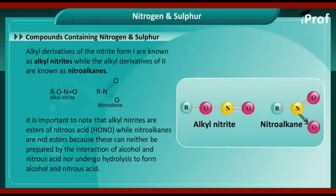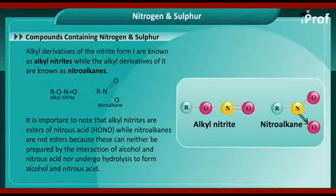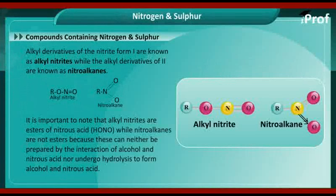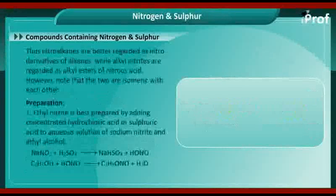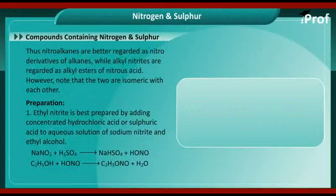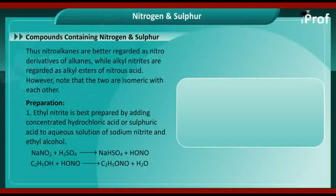It is important to remember that alkyl nitrites are esters of nitrous acid (HONO), while nitroalkanes are not esters, because these can neither be prepared by the interaction of alcohols and nitrous acid, nor undergo hydrolysis to form alcohol and nitrous acid. Thus, nitroalkanes are better regarded as nitro derivatives of alkanes, while alkyl nitrites are regarded as alkyl esters of nitrous acid. However, it is important to note that the two are isomeric with each other.